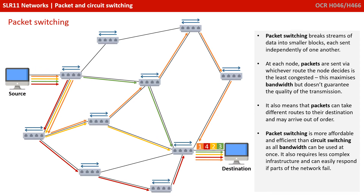At each node, packets are sent via whichever route the node decides is the least congested, and this maximises bandwidth but doesn't guarantee the quality of the transmission. It also means that packets can take different routes to their destination and therefore arrive out of order.